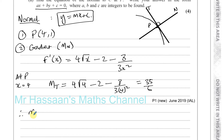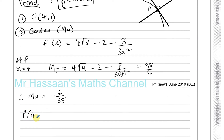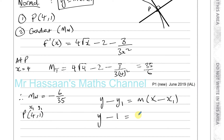The relationship between the normal and tangent: the product of their gradients is −1 because they are perpendicular. So the gradient of the normal is the negative reciprocal of the gradient of the tangent — opposite sign and upside down — giving −6/35. Now we have the point P(4, 1) and the gradient, so using y − y₁ = m(x − x₁): y − 1 = −6/35 × (x − 4).